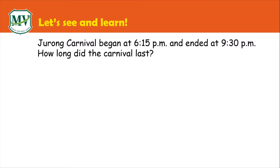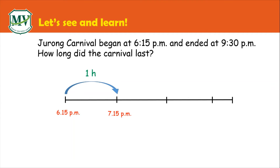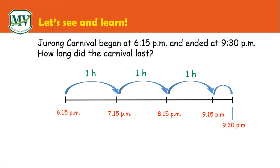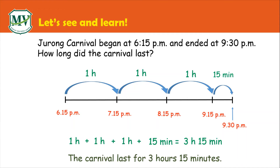Let's have an example. The carnival began at 6:15 p.m. and ended at 9:30 p.m. How long did the carnival last? To solve this problem, we have to use a timeline to help us find the duration of time. We have to do this hour by hour. From 6:15 to 7:15 is 1 hour. 7:15 to 8:15 is 1 hour. 8:15 to 9:15 is 1 hour. And it ended at 9:30 p.m., so from 9:15 to 9:30 is 15 minutes. Add all the lengths of time: 1 hour plus 1 hour plus 1 hour plus 15 minutes equals 3 hours 15 minutes. The carnival lasted 3 hours 15 minutes.